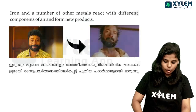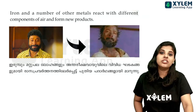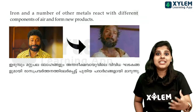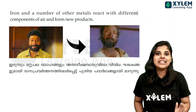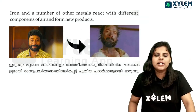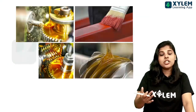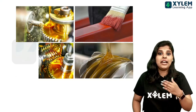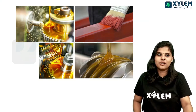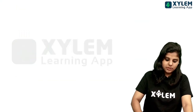What is rusting? It is corrosion — our iron reacts with atmospheric oxygen and water content to form rust. To prevent corrosion, we can use oil, grease, paint, or galvanization — coating iron with zinc. This is called galvanization, and it prevents rusting.